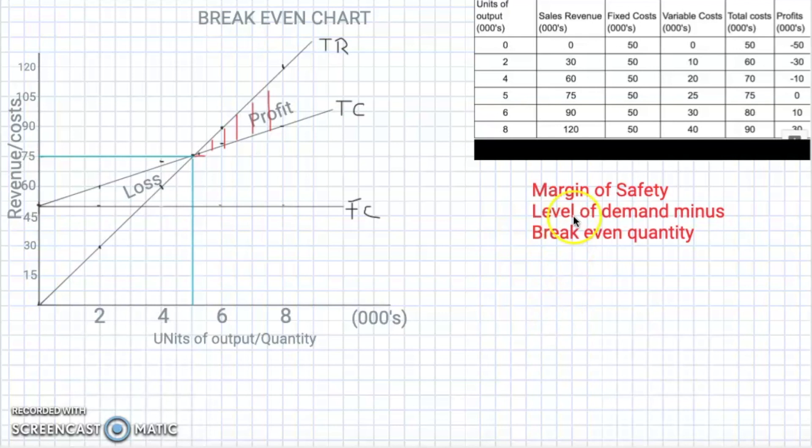So here I have a simple definition of what the margin of safety is or how it is calculated. It is really the level of demand minus or less the break-even quantity.